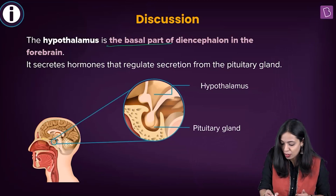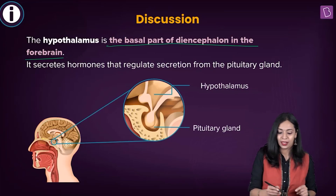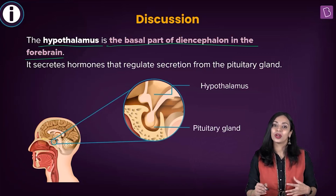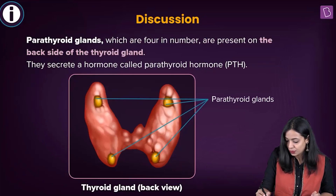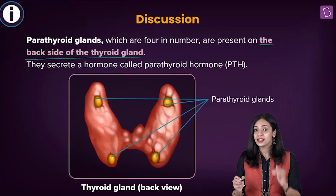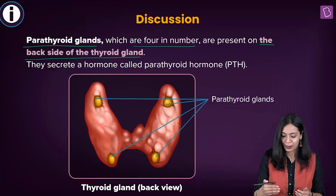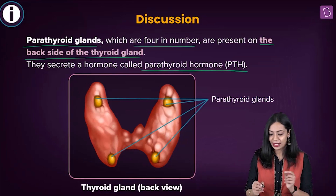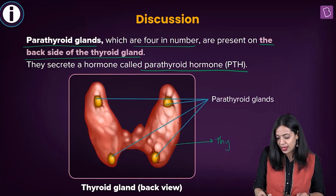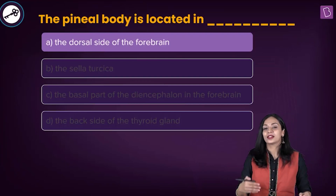The basal part of the diencephalon in the forebrain is where we find the hypothalamus, which is involved in secretion of several hormones that regulate the activity of the anterior pituitary gland. The back side of the thyroid gland is the location of the parathyroid glands — there are four parathyroid glands present behind the thyroid gland, involved in secretion of parathyroid hormone (PTH). Therefore, the pineal gland's location is the dorsal side of the forebrain, and the correct answer is option A.